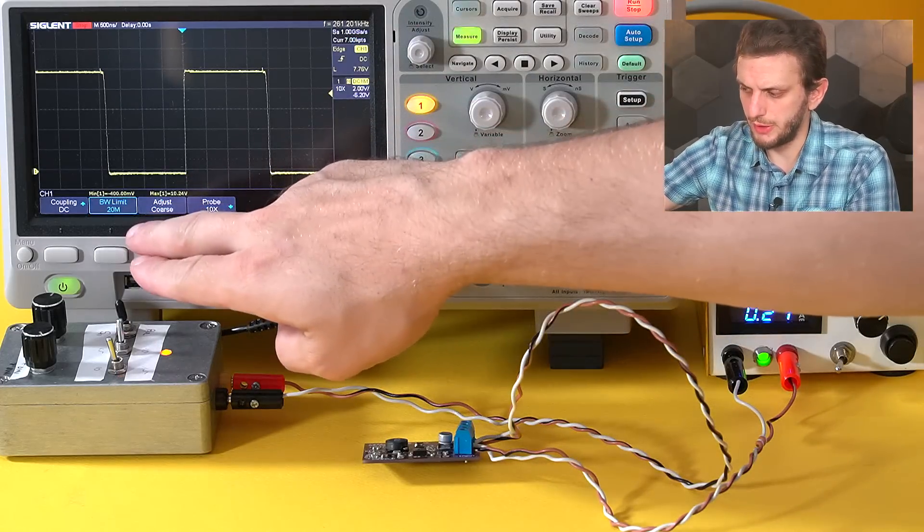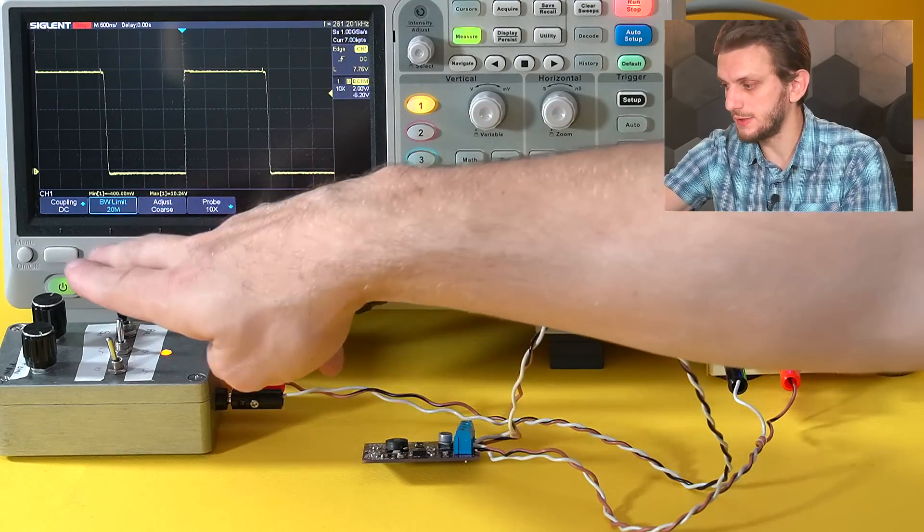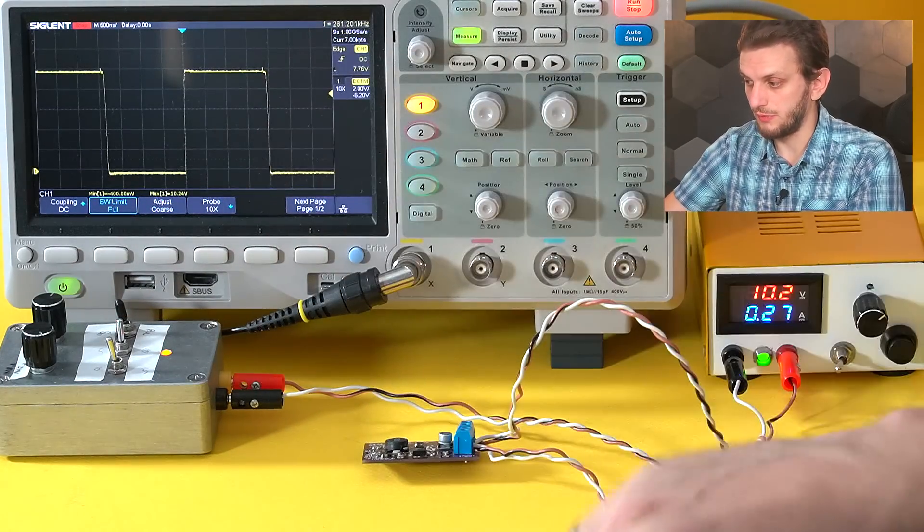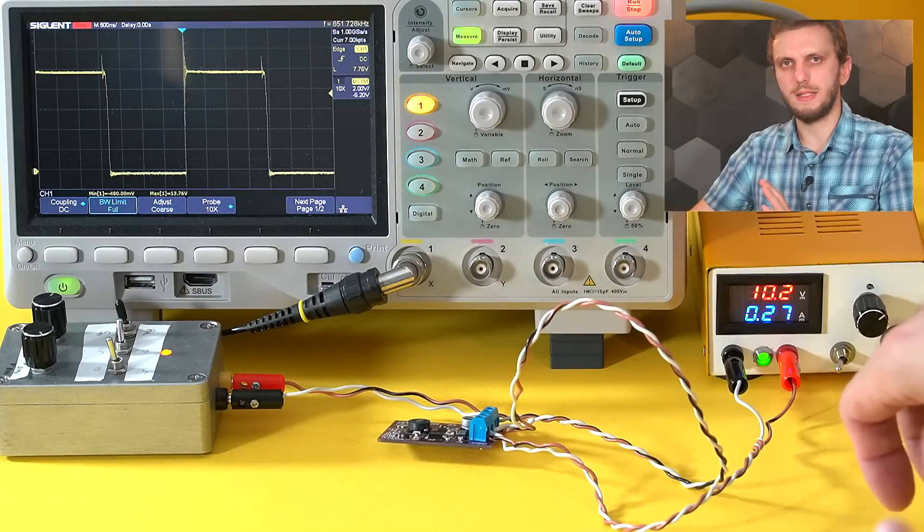But rather it's something that you might even miss if you don't set up your measurement equipment properly. So right now I have my 20 megahertz bandwidth limit, waveform looks very nice. If we activate the full bandwidth and remeasure, we see a slightly different story.